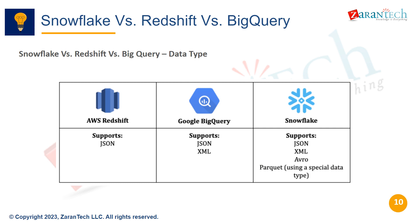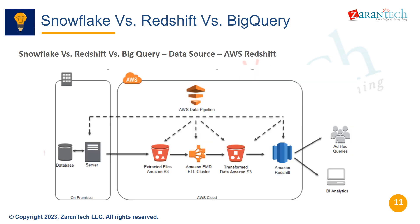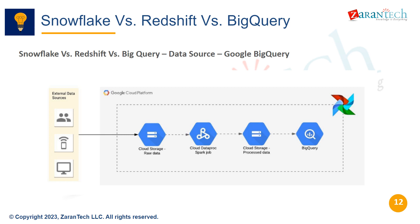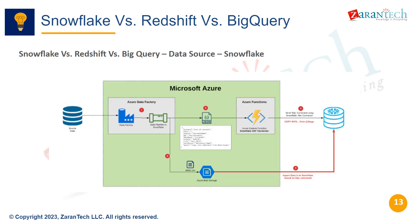All three platforms support common data types like structured, semi-structured, and unstructured data. Snowflake and BigQuery can query data stored in Redshift, providing additional flexibility. Snowflake can also query data stored in BigQuery. However, Redshift does not have native connectivity, and neither Redshift nor BigQuery can directly query data stored in Snowflake — additional integration would be needed.